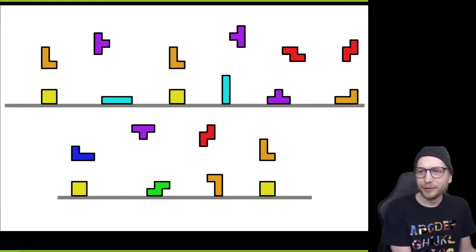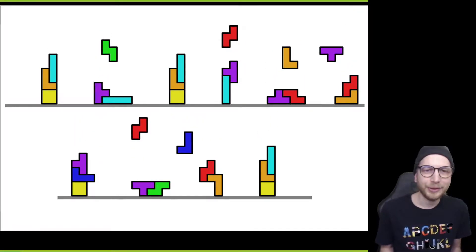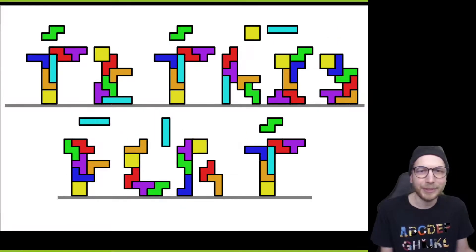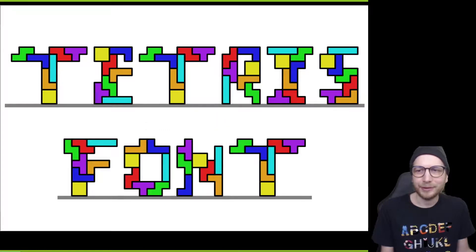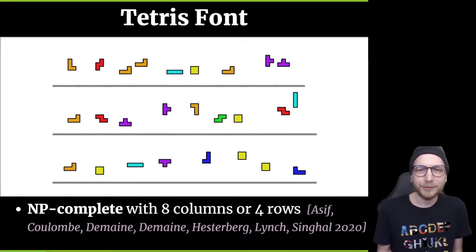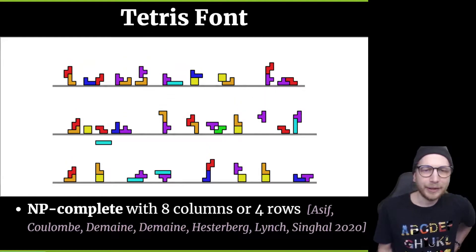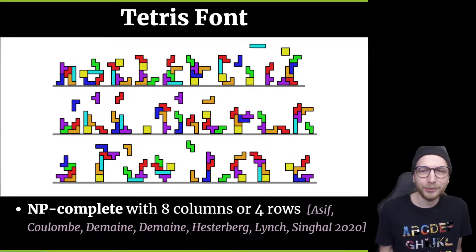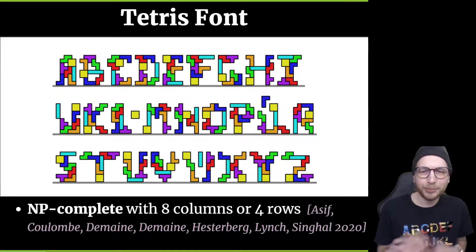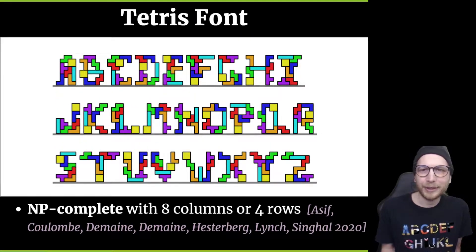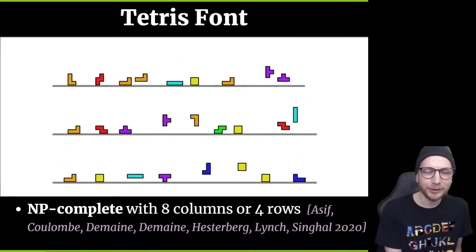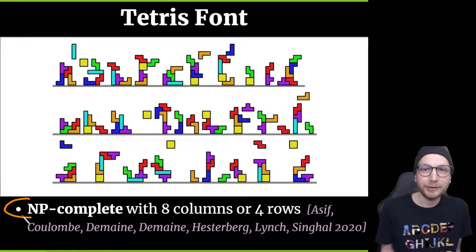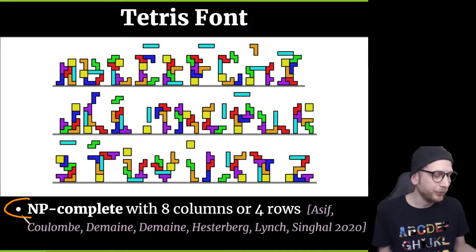We start with Tetris font. Each letter of the alphabet is made out of the seven tetromino pieces in the game of Tetris. Here we see Tetris font spelling itself. Here's the full alphabet. These letters were designed so you could actually construct them in Tetris physics, with no extreme overhangs. We like to pair our fonts together with mathematical results, so we published this font together with an NP-completeness result — a new one showing that Tetris is hard even with just eight columns or four rows.